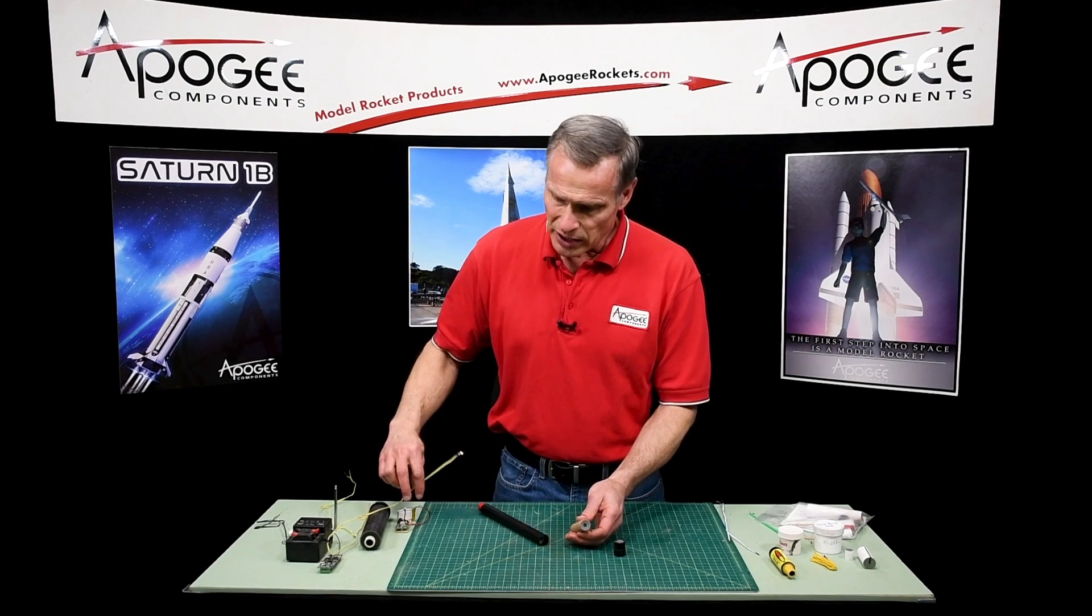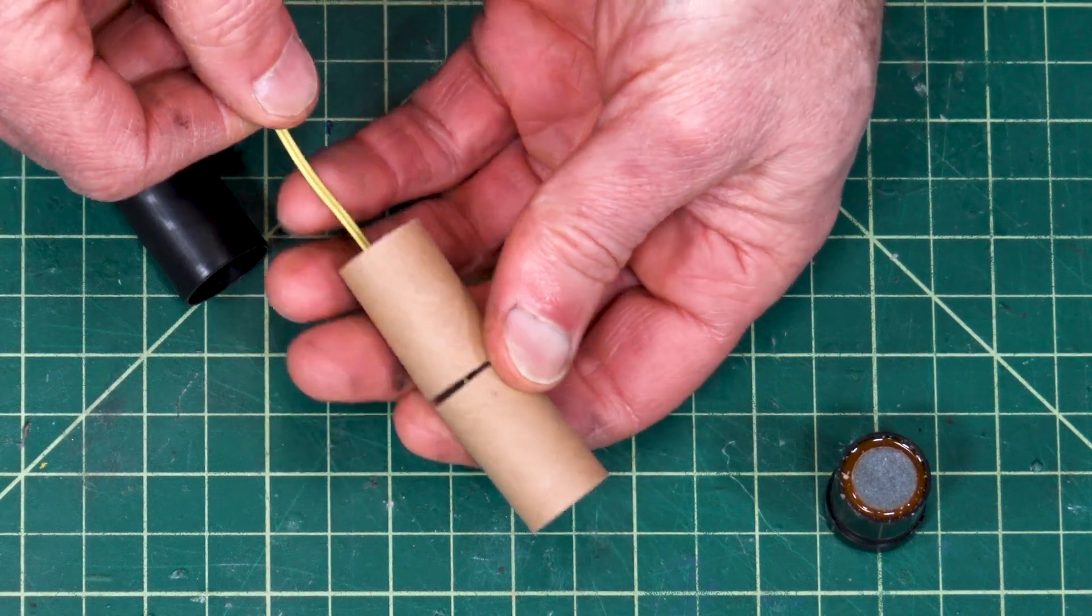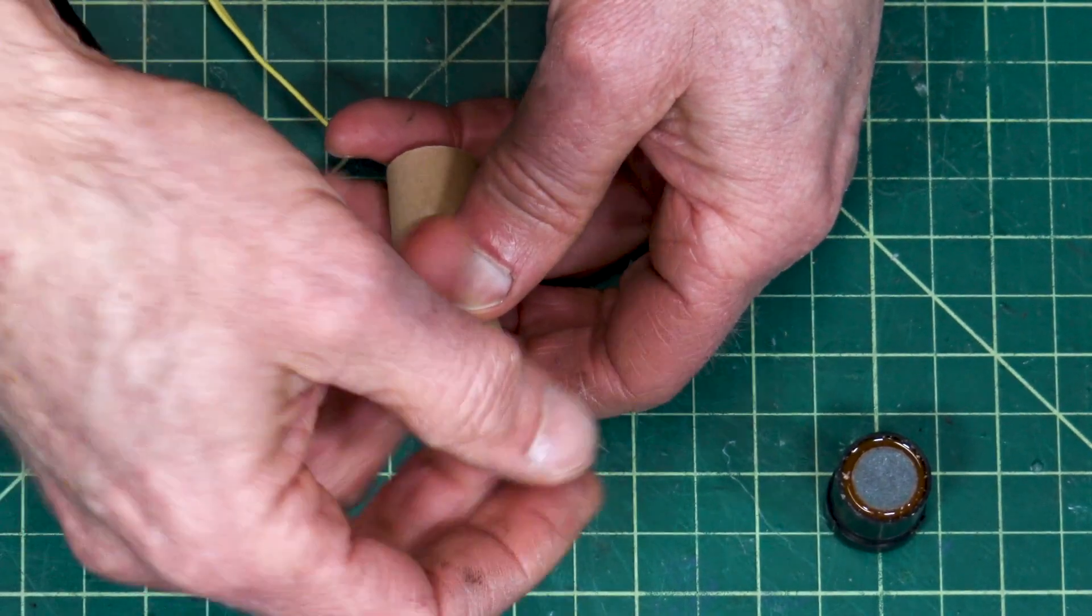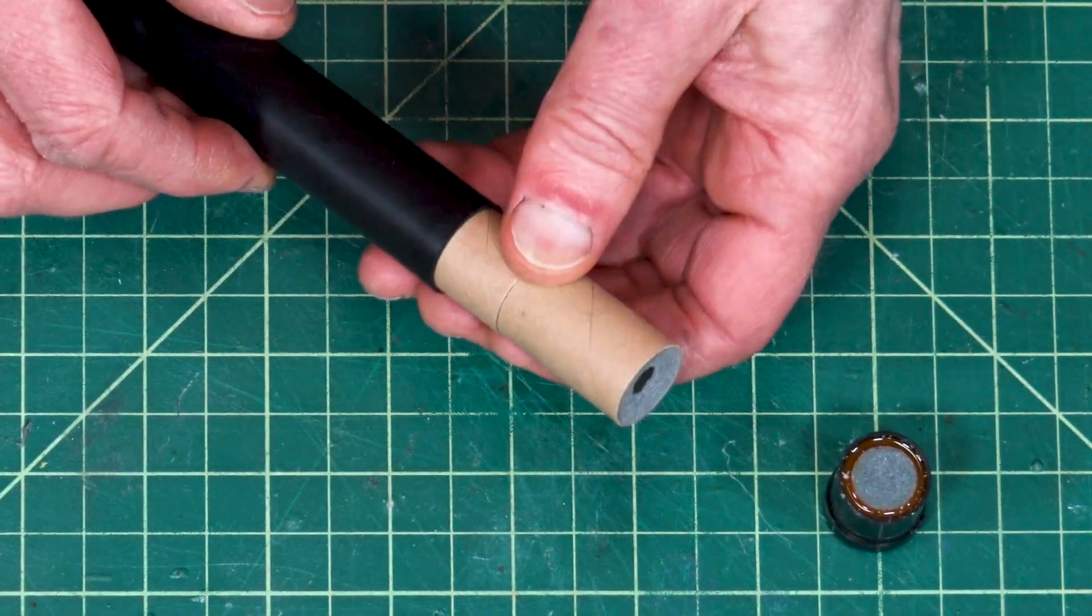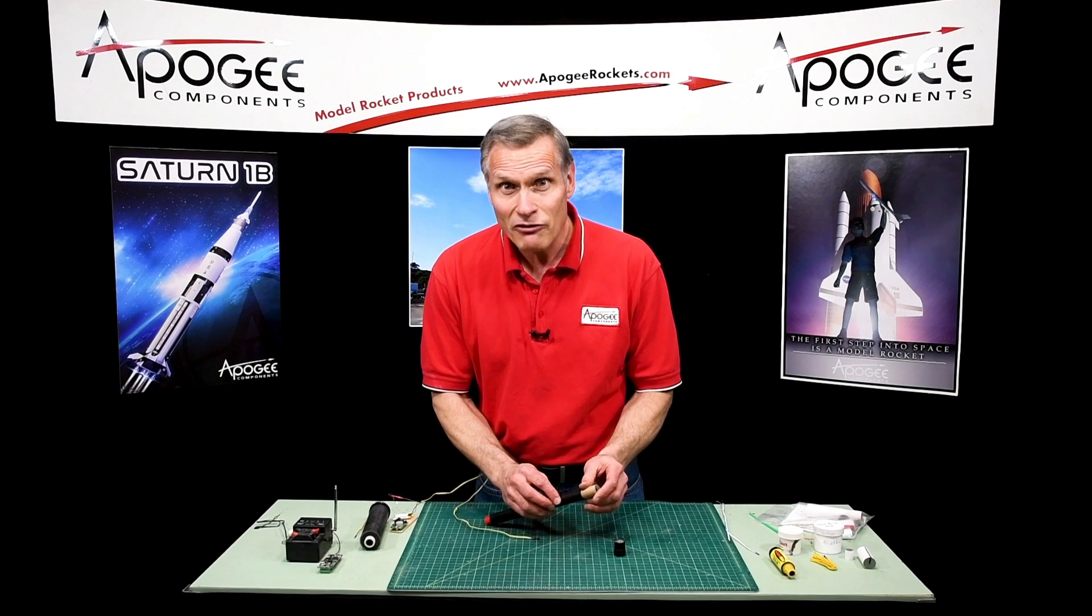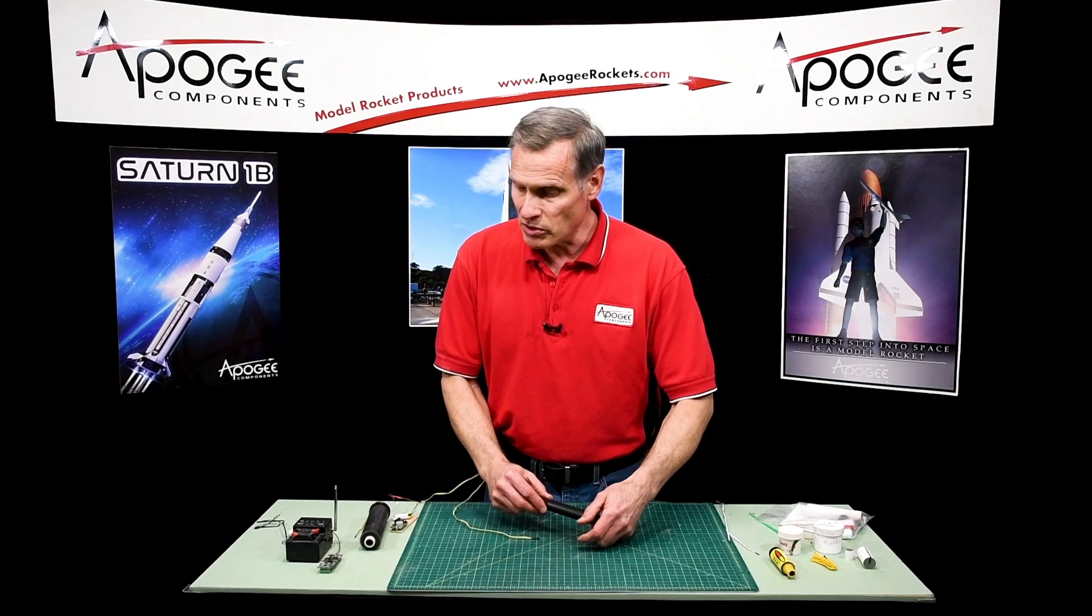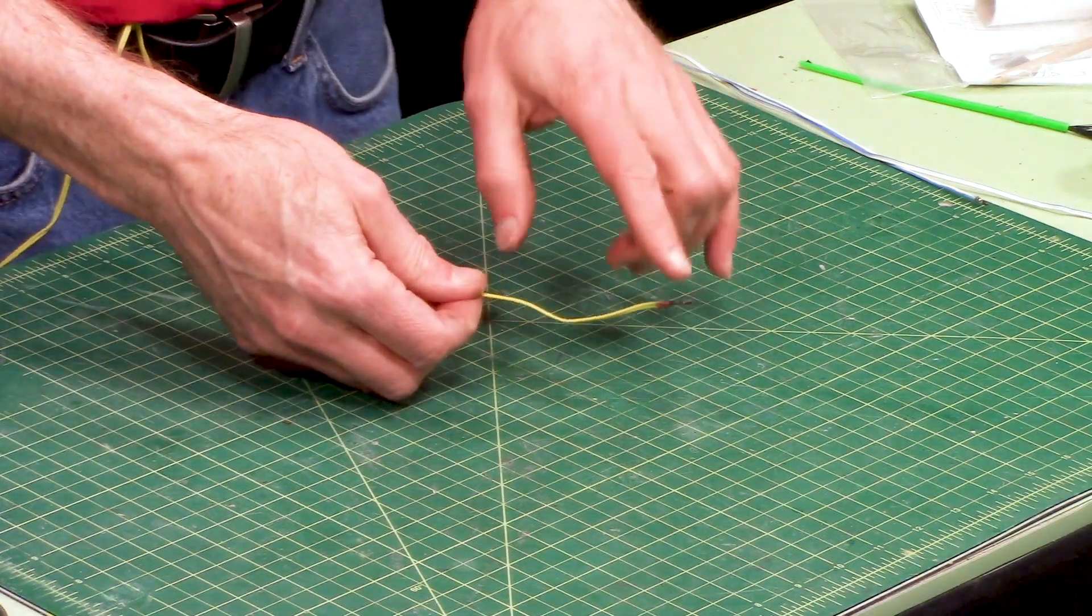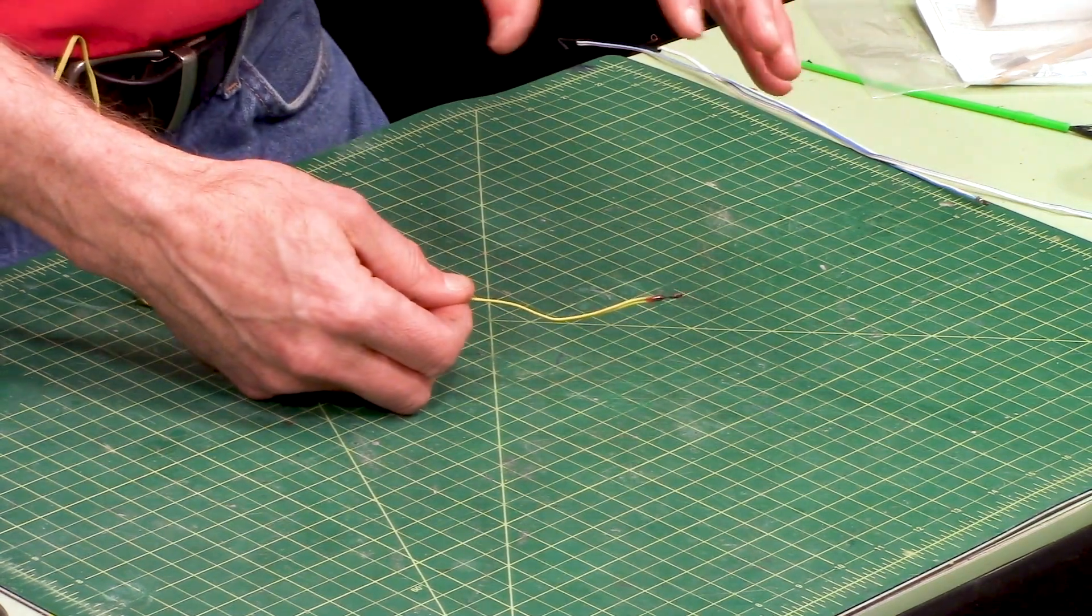So the e-match that Cessaroni gives you goes up through the inside and then it ignites that nugget inside there and then it ignites the rest of the grains. Aerotech doesn't have that in their motors so that's why they need such a big head on the igniter to get it started. The igniter on the e-match is not enough to fire it off.